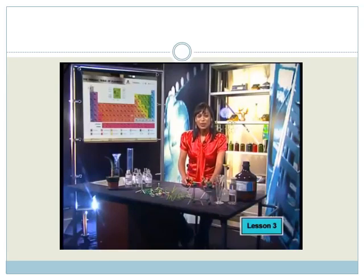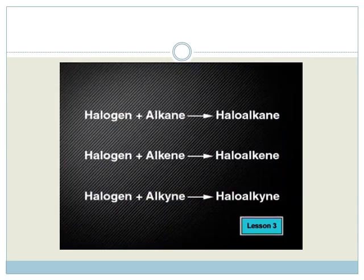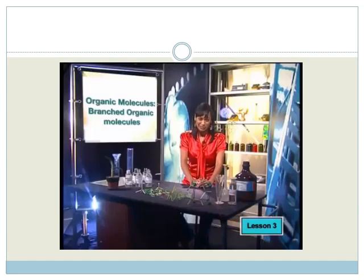This means that they all have atoms from the group 7 set of elements attached to them. We call these types of hydrocarbons haloalkanes. We also find halogens attached to alkenes to make haloalkenes, and to alkynes to form haloalkynes. But let's keep it simple for now and try to name some haloalkanes.